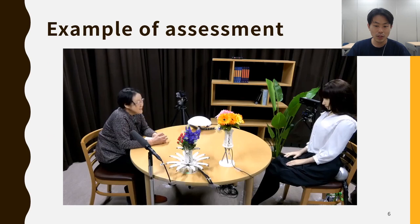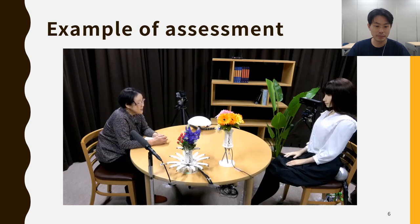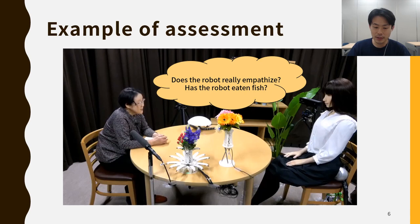This is an example of an assessment response from the dialogue experiment. In this case, the robot tried to empathize with the subject, but you may think: does the robot really empathize, or can the robot eat fish? This example suggests that there is a limitation for the autonomous system to empathize towards human beings.